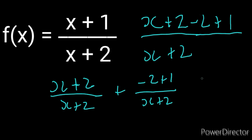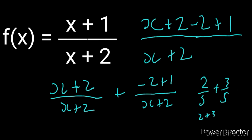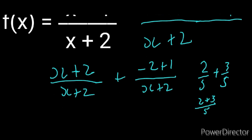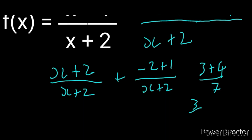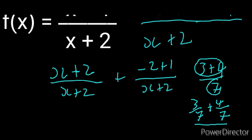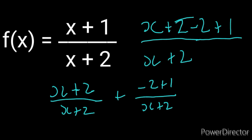Whenever we're adding or subtracting fractions — for instance, let's say we've got 2 over 5 plus 3 over 5 — the rule is: whenever the denominators are the same, we only have to add the numerators and divide by that denominator. Basically, I'm just moving backwards. So if you've got something like 3 plus 4 over 7, this can be split into 3 over 7 plus 4 over 7. I'm just applying that rule here.